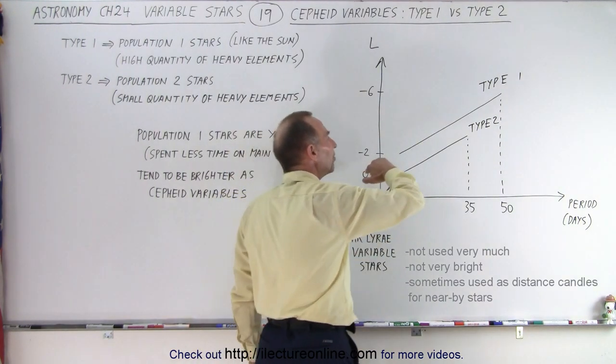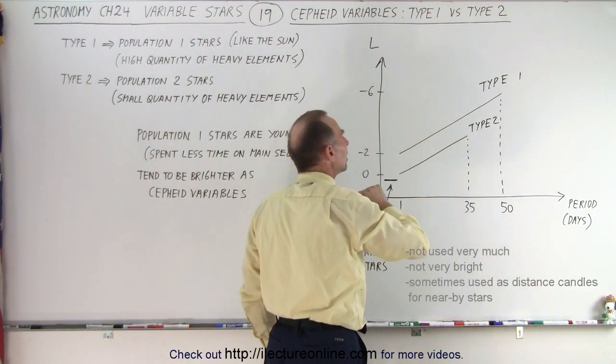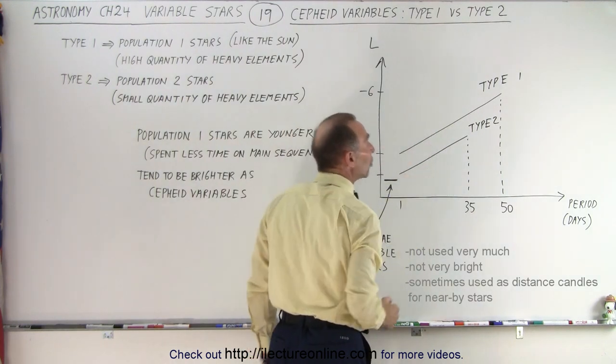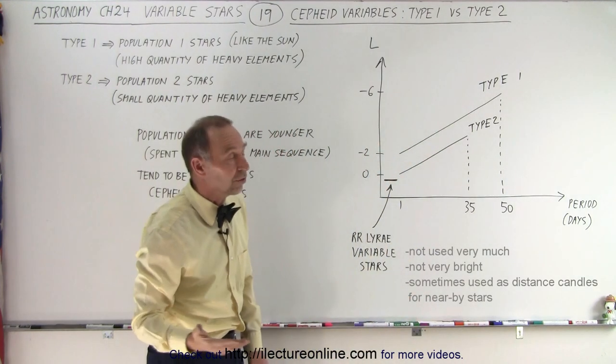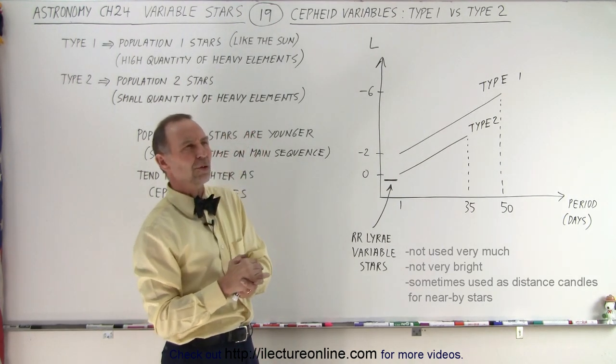But notice that there is that similar relationship between period versus luminosity, although like we said the Type 1's are brighter than the Type 2's. So it is in our interest to first of all differentiate the Type 1's versus Type 2's. How do we do that?